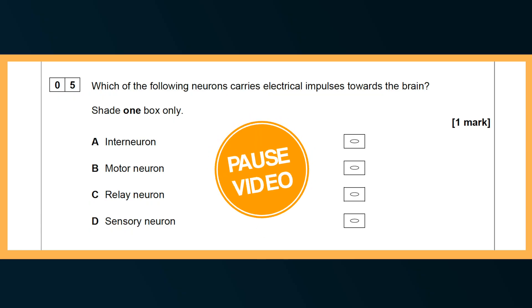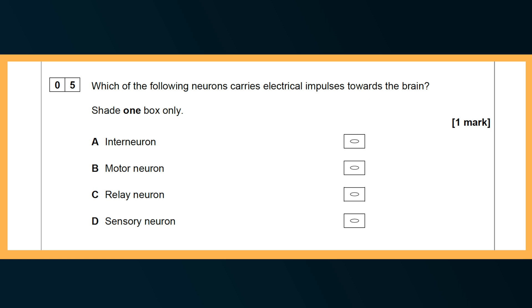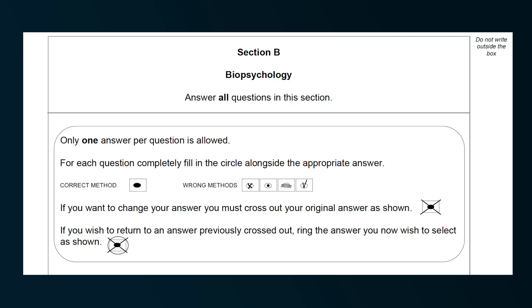In the biopsychology section for this paper, there are three short questions and a 16 mark essay. Question 5 is a multiple choice question which says: which of the following neurons carries electrical impulses towards the brain? Shade one box only. One mark. Make sure to complete multiple choice questions correctly as per the guidelines on the screen. It would be a shame not to get the mark because you didn't fill it in correctly when you knew the answer. A tip with answering multiple choice questions is to rule out the ones you are sure are incorrect to help narrow it down.